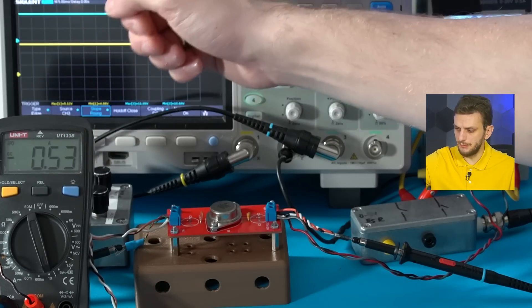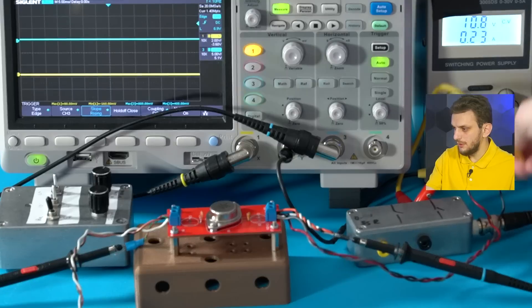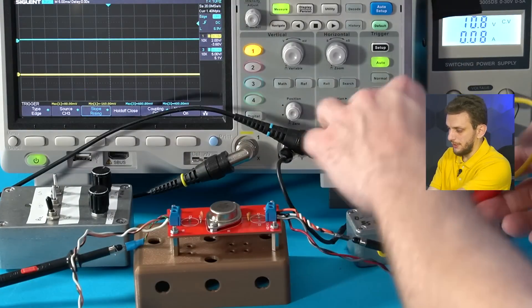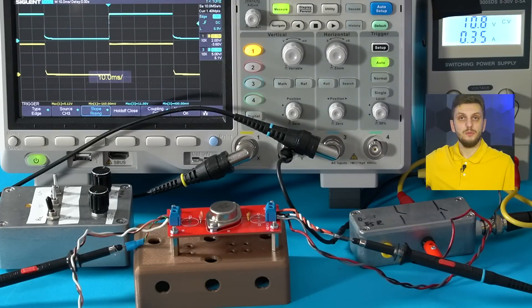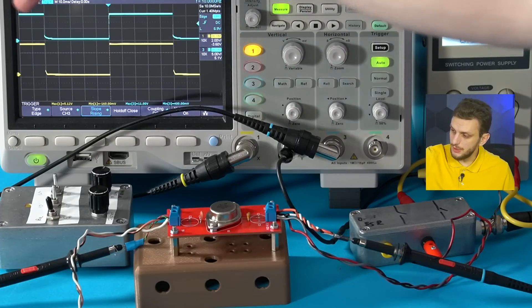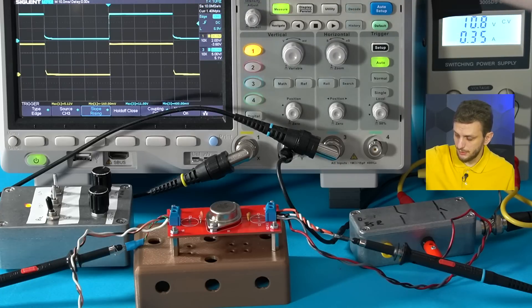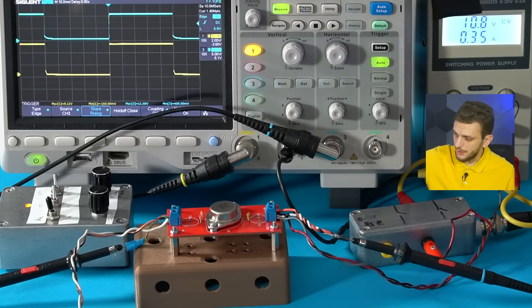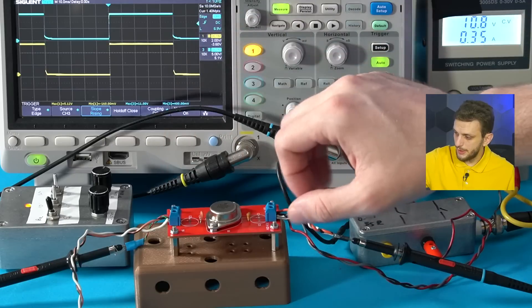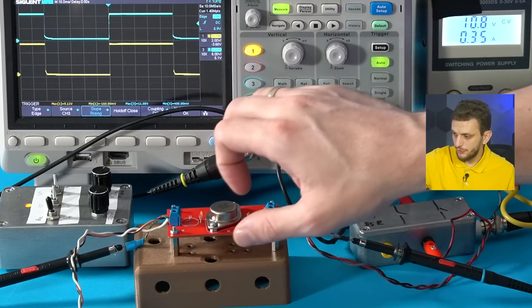So before starting the actual test we can turn on the device and set the static current that we wish to test with. So 500 milliamps should do. Then we can connect the supply through the electronic switch and proceed to turn on the signal generator. So with the setup turned on we can see in blue the supply voltage. So this is going between 0 and about 10 volts so it's 5 volts per division. And then in yellow we see the output of the supply which is about 5 volts. So it's 2 volts per division.